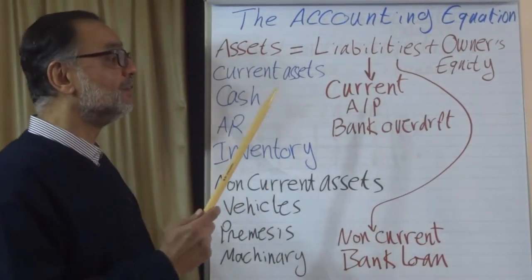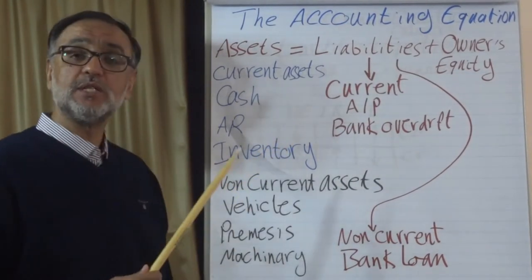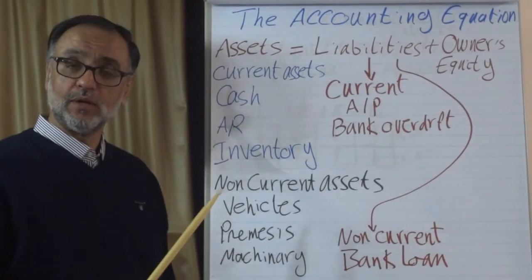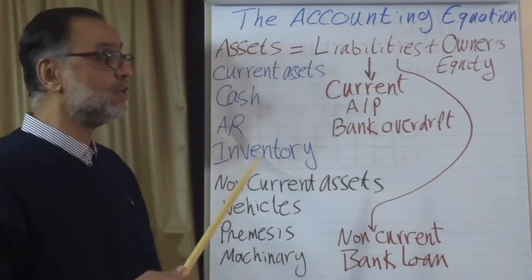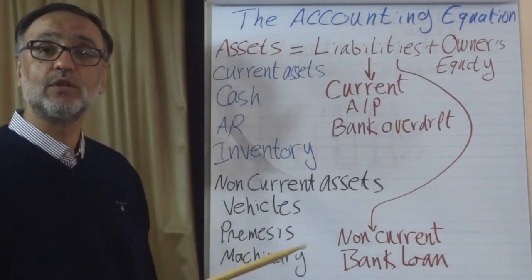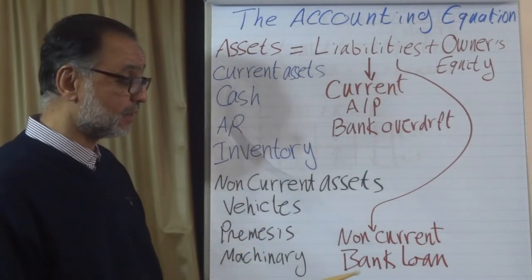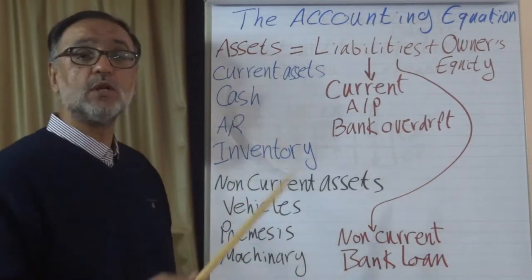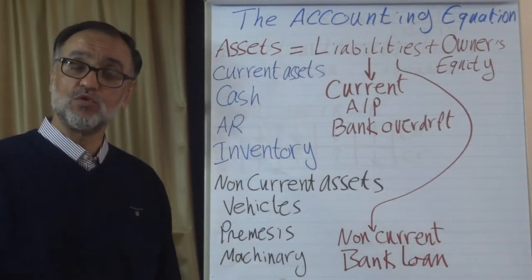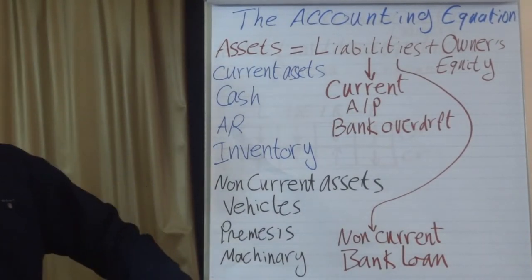Liabilities are also divided into current and non-current. Examples of current liabilities are accounts payable — credit received by the business from its suppliers, typically payable within 30 to 90 days — and bank overdrafts, which represent very short-term credit from the bank. Non-current liabilities include bank loans. Owner's equity is the money invested in the form of cash or assets by the owners.